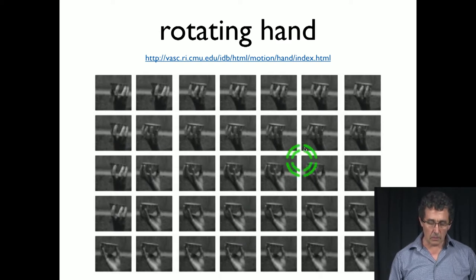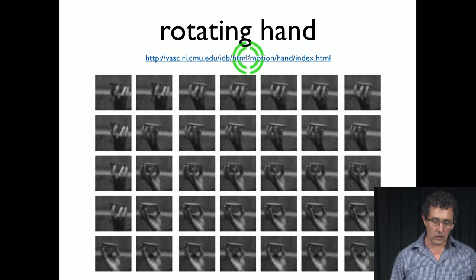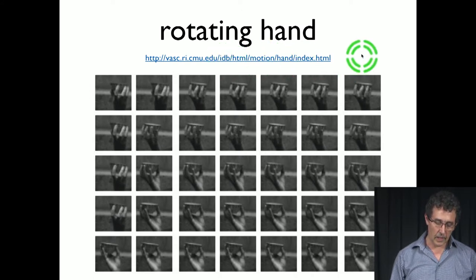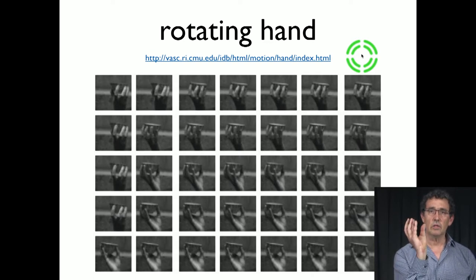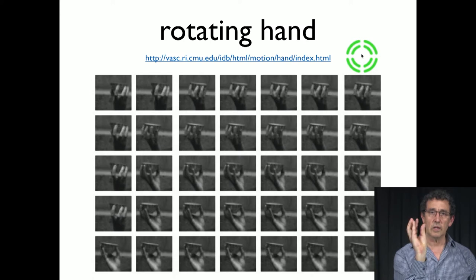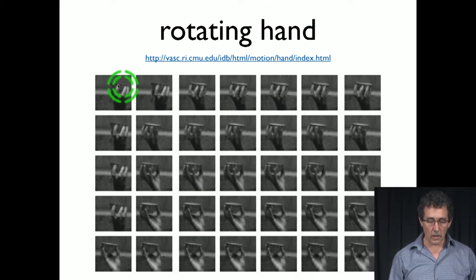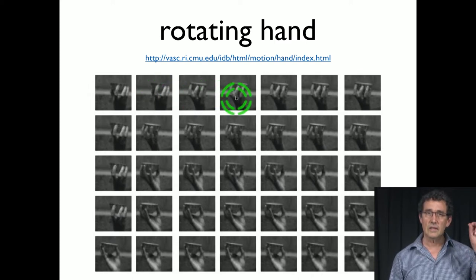Here is our first example. It's a rotating hand example that I got from Carnegie Mellon in this website. We have a hand holding a teapot and rotating. The hand is rotating as we're taking the video or the film of this hand. And we have as our data points basically the frames. Each frame, we think about it as a data point.